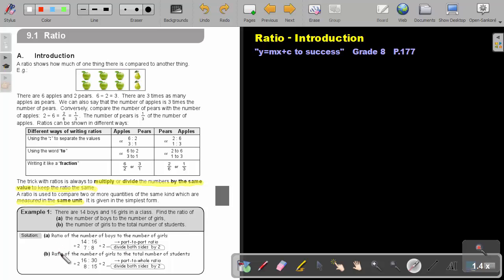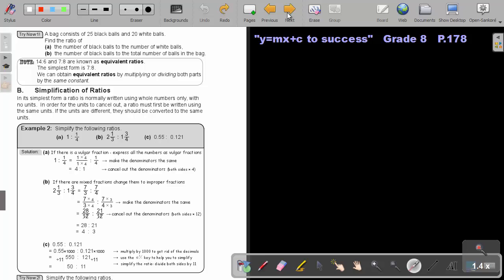If I ask you the ratio of number of girls to the total number of students, the girls is 16, the total will be 14 plus 16, which is 30. So if I divide by two on this side, and I divide by two on this side, I'm again simplifying the ratio. I get 8 to 15. Then we call this part to whole, because it's the part, the girls part, to the total, which is representing the whole. And remember, if I divide one side by two, I must also divide the other side by two.